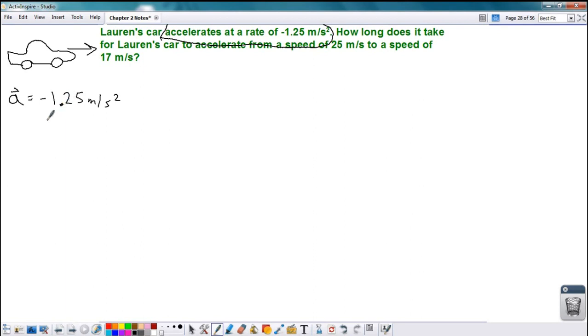How long does it take? Okay, so that's the find. I'm going to write that down here. How long? That's a time, the change in time. I'm going to continue to write down my givens above. For Lauren's car to accelerate from a speed, so it's starting with a speed. So that's the initial speed, v_i = 25 meters per second, to a speed of 17 meters per second. So that's the final speed, v_f = 17 meters per second.